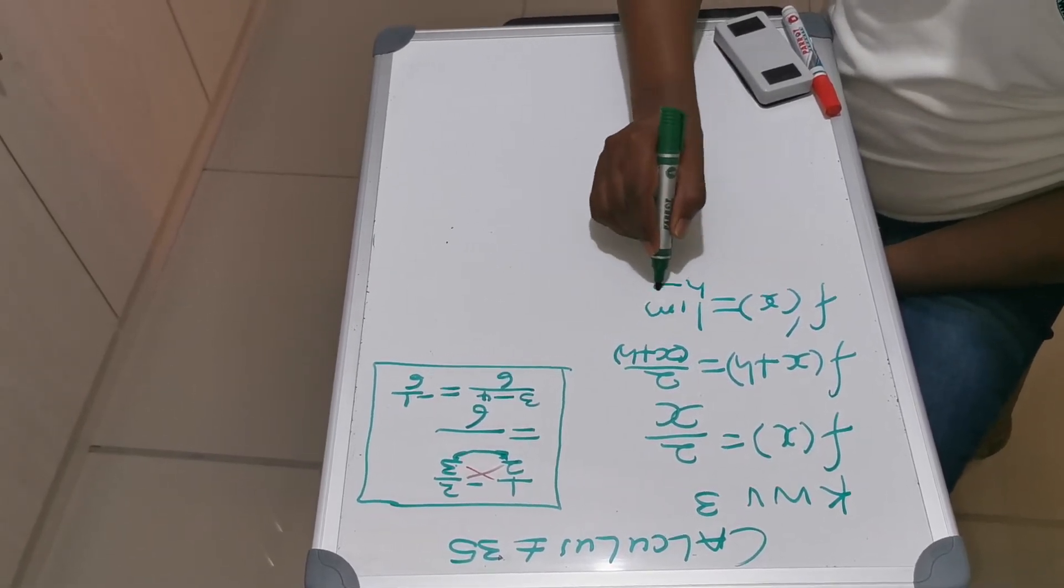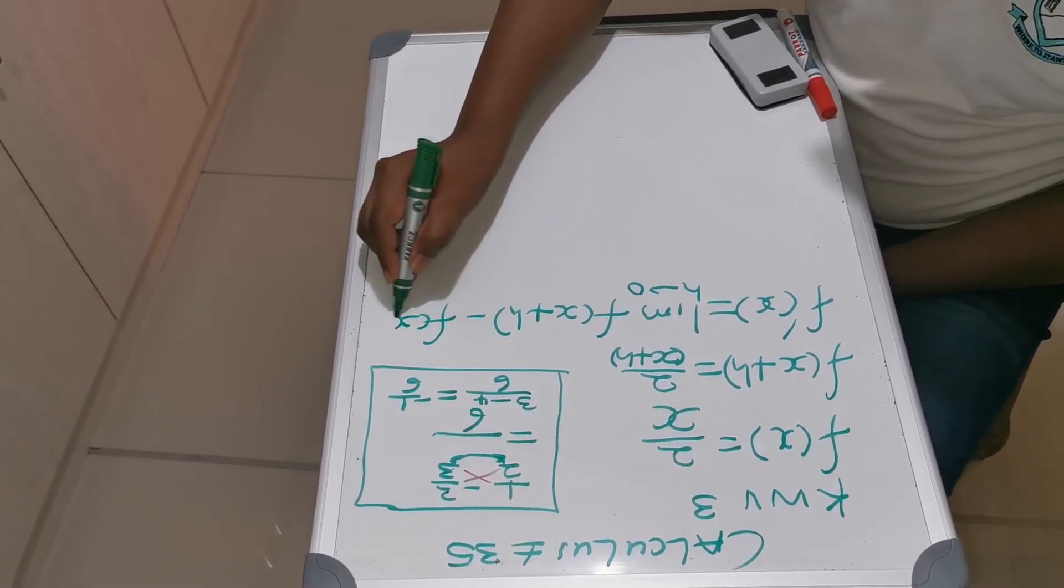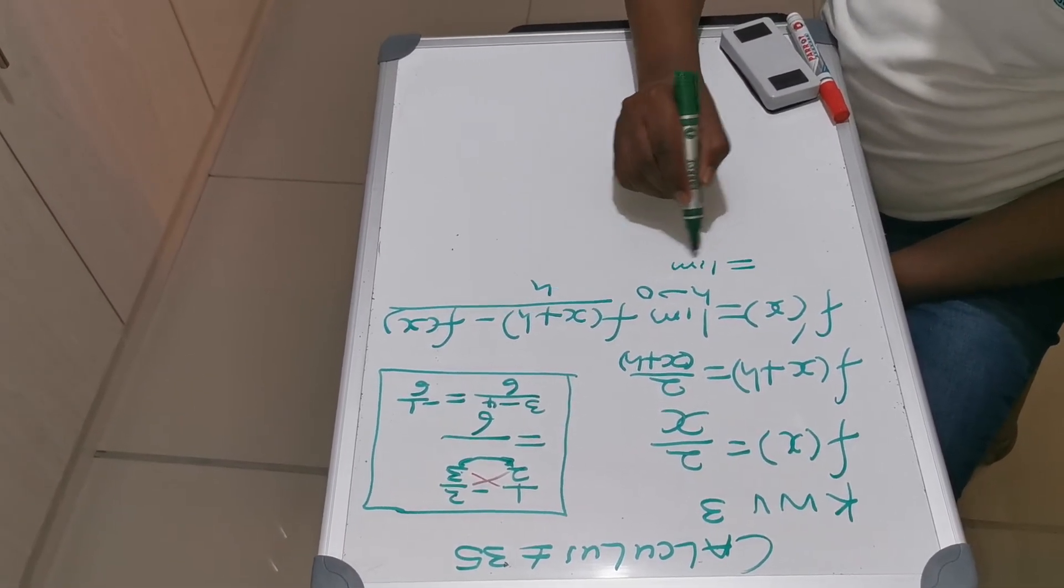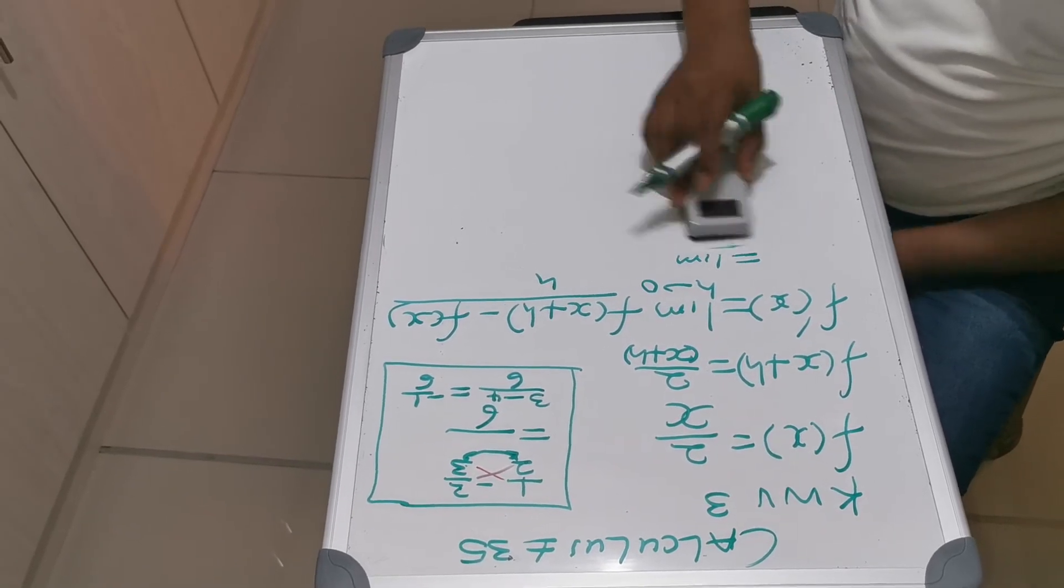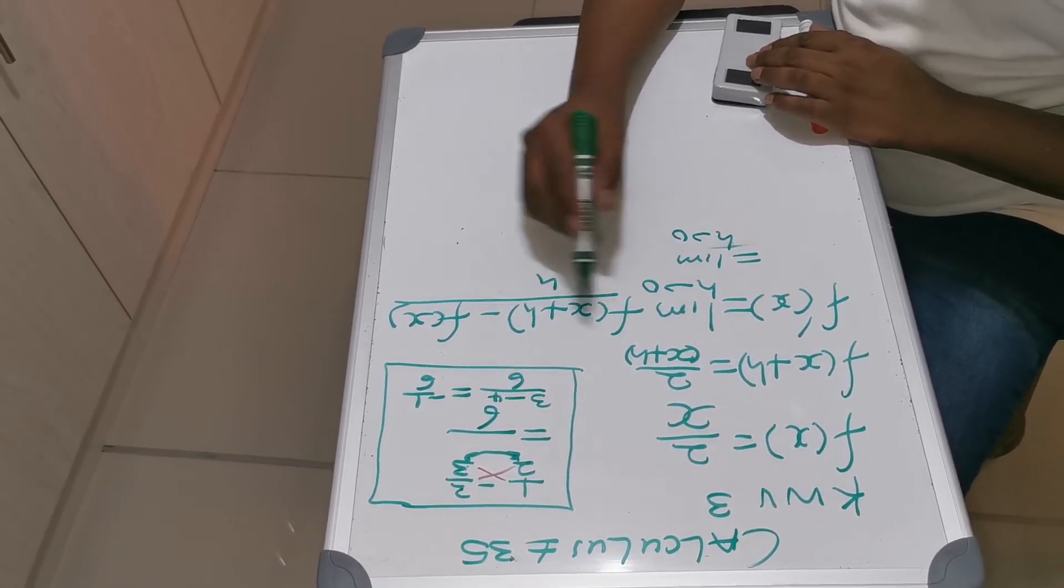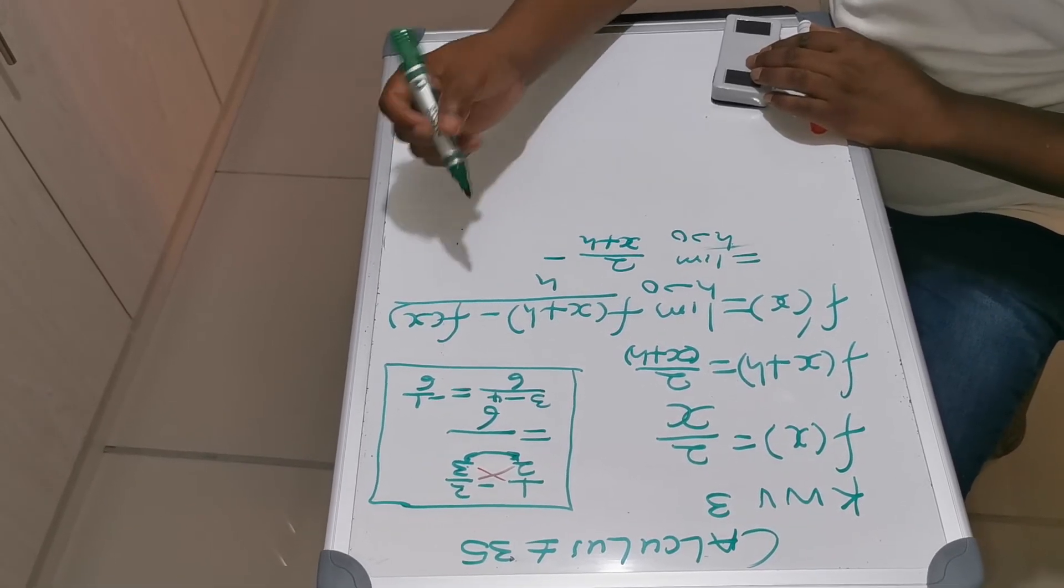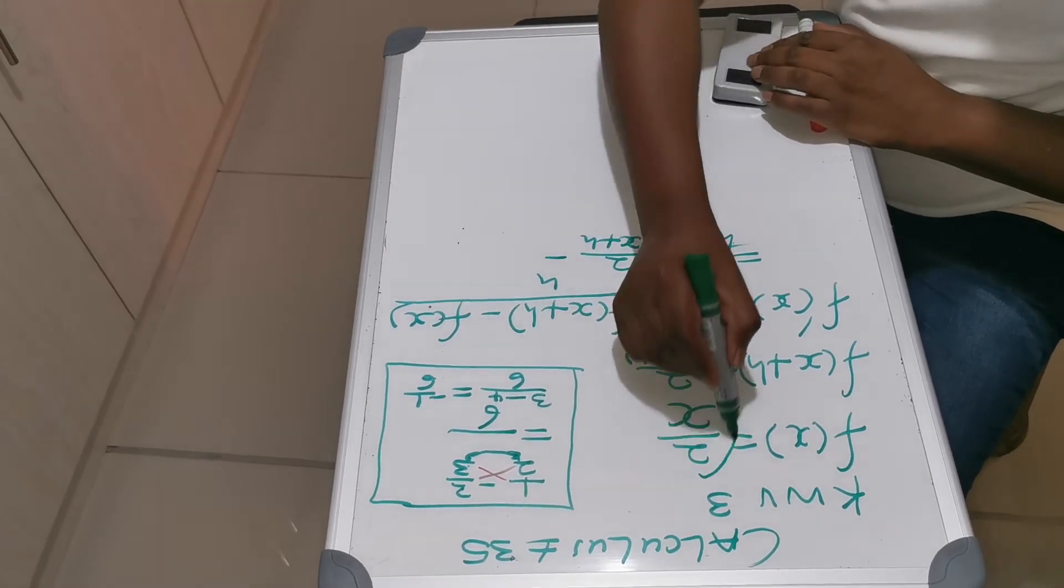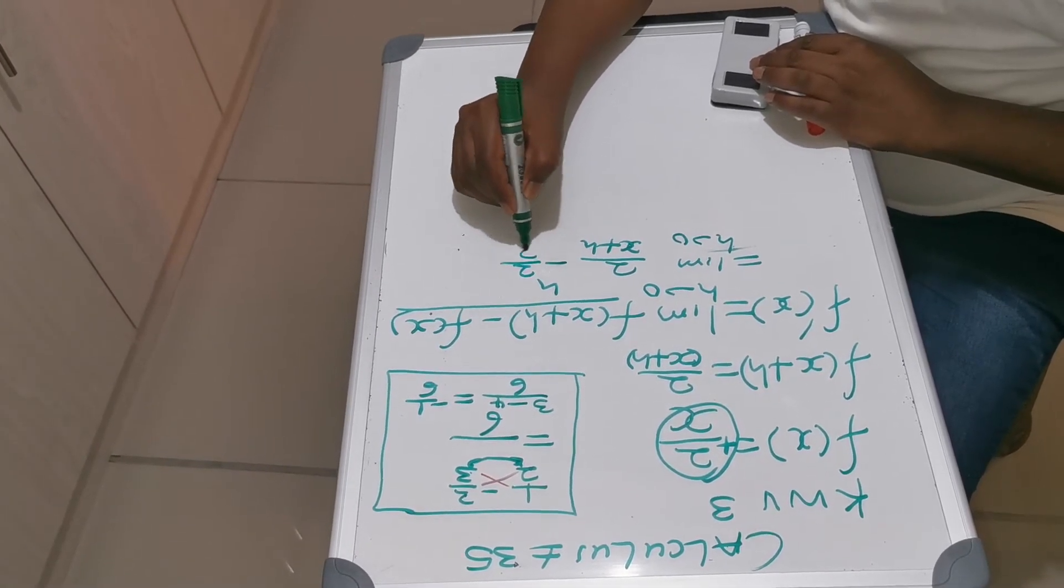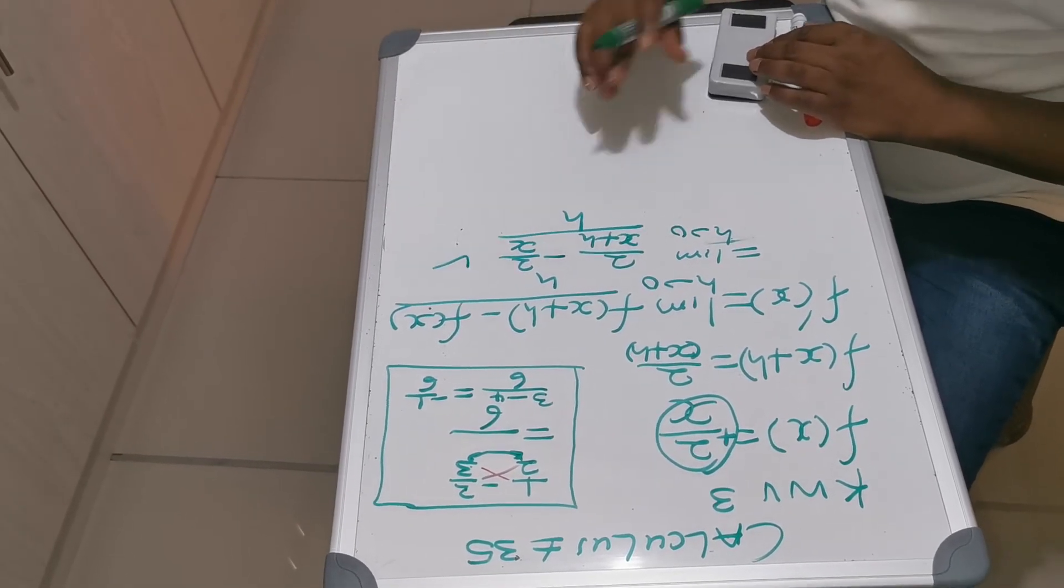Now where there is X plus H, you put 2 over X plus H minus F of X. You know your F of X. But in this case it's positive, so there is no need to put in a bracket. This is over X, over H. And there is a mark for the substitution.